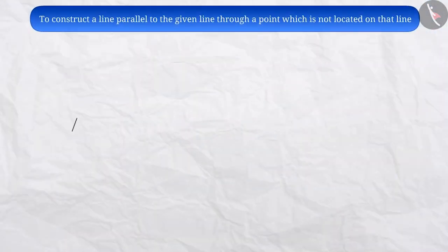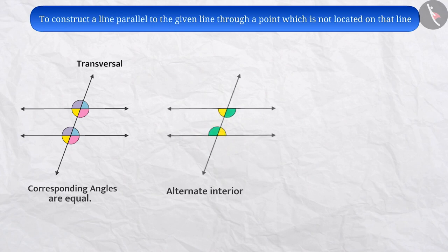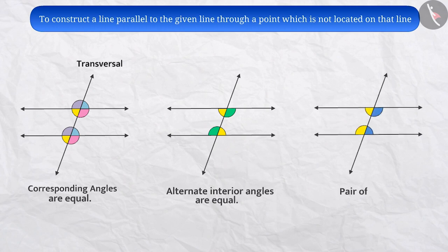As you know, when a transversal cuts two parallel lines, each pair of corresponding angles are equal, each pair of alternate interior angles are equal, and each pair of interior angles on the same side of transversal are supplementary, that is, their sum is 180 degrees.